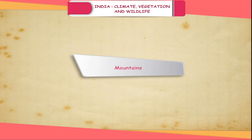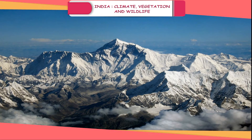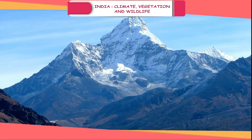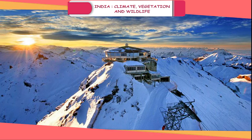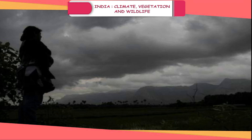Mountains: In India, the Himalayan mountain acts as a climatic barrier. It stands as a barrier against the cold wind from northern Asia. They also force monsoon winds to shed their moisture within the country. Without this barrier, the monsoon winds would have blown into central Asia and the northern parts of India would have remained dry.